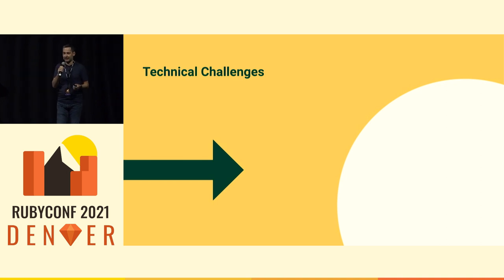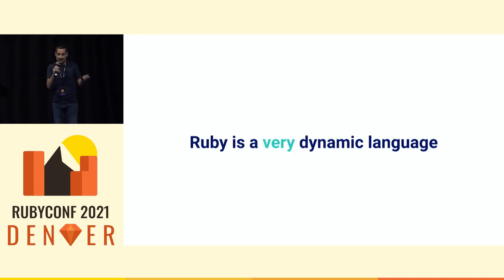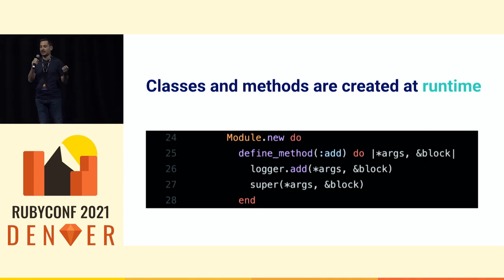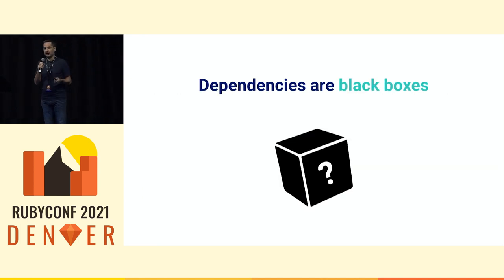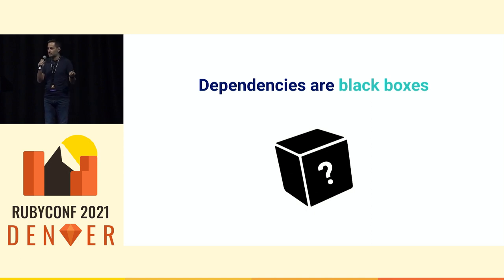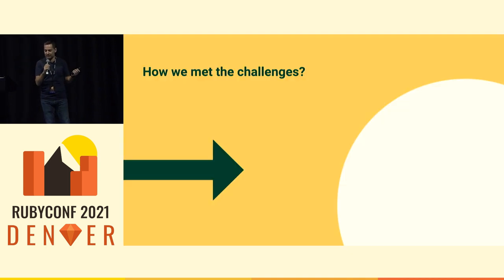But then obviously there are also technical challenges. Ruby, as we said, is a very dynamic language. We always create classes and methods at runtime. For example, a new module can be created at runtime which defines a method at runtime, and this can be conditional as well. So it's impossible to statically type check or even understand what this code is doing without actually running it. Moreover, the gems that we rely on are basically black boxes. When you add a dependency on a gem, how do you know how it works? There are no artifacts telling you what classes are exported, what modules exist, what methods there are, or what parameters those methods take. So as far as static typing tools are concerned, dependencies are black boxes — a big technical challenge.